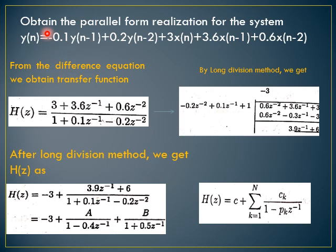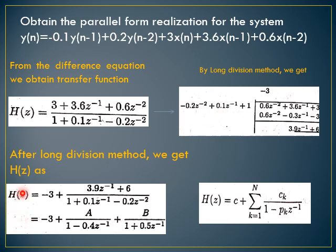Obtain the parallel form realization for the given difference equation. From the difference equation we obtain the transfer function. Since the power of the numerator and denominator are the same, we use the long division method. The terms are kept in reverse order and we divide. We get a constant of -3, and after the long division we obtain H(z) = -3 + (3.9z⁻¹ + 6) / (denominator expression), reducing the numerator power to first order.